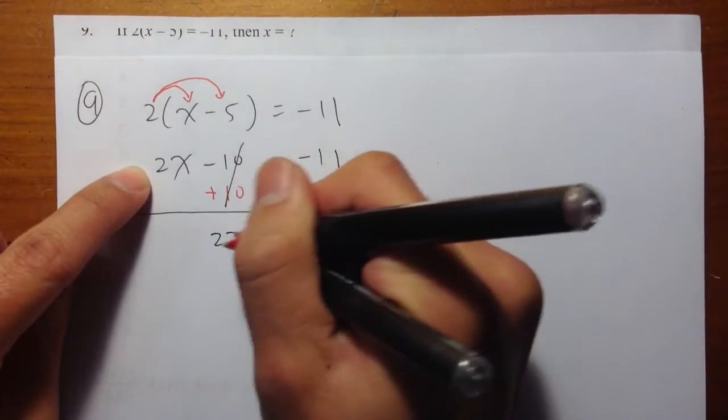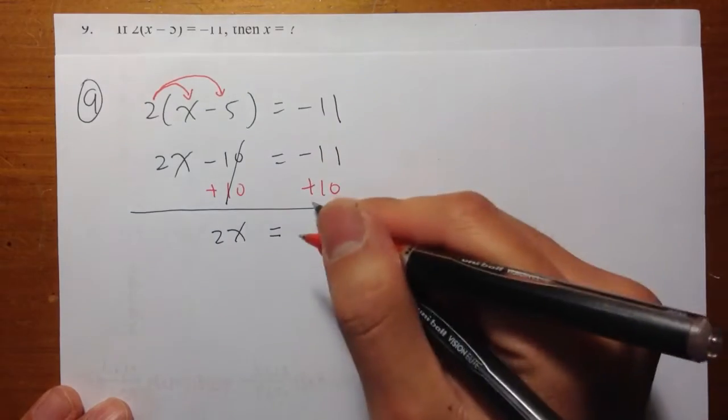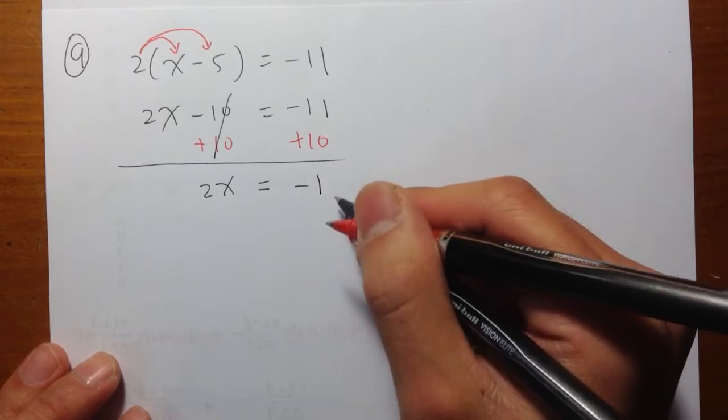So I have 2x, bring down the equal sign, negative 11 plus 10 is negative 1. 2 times x is equal to negative 1.